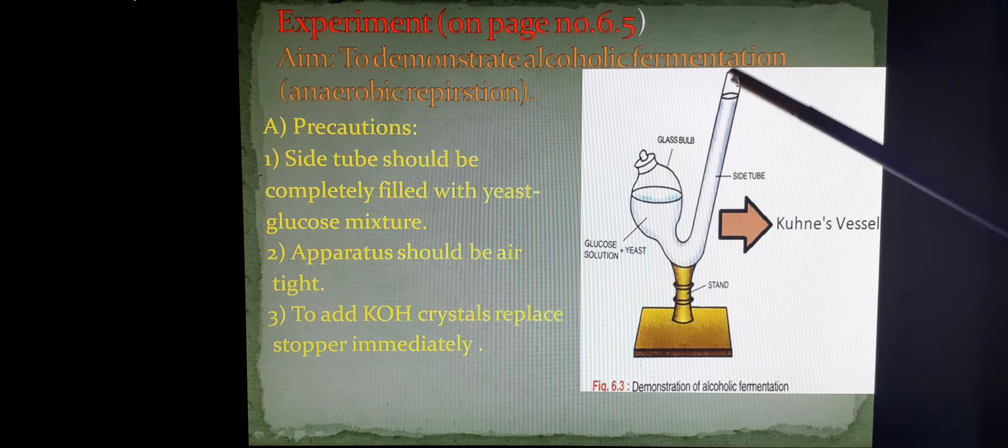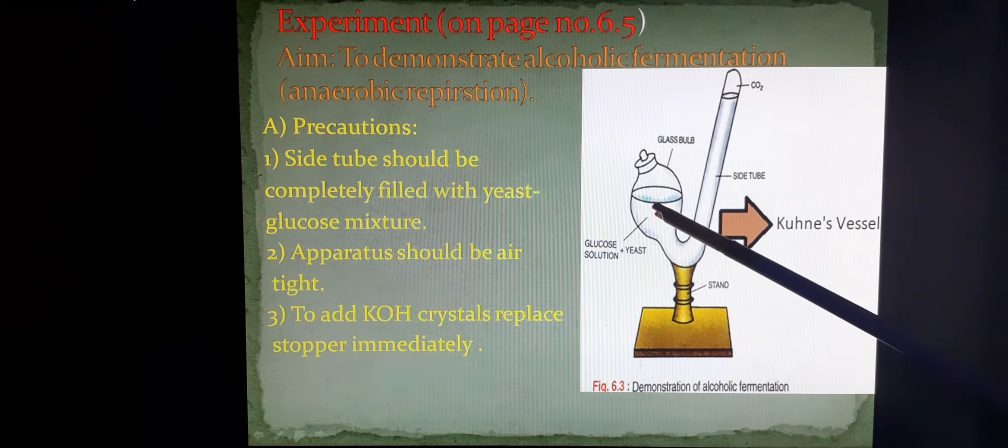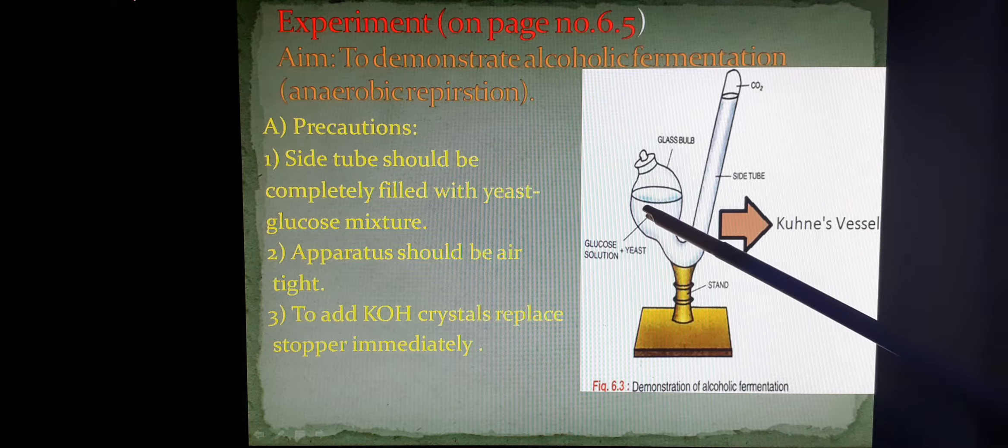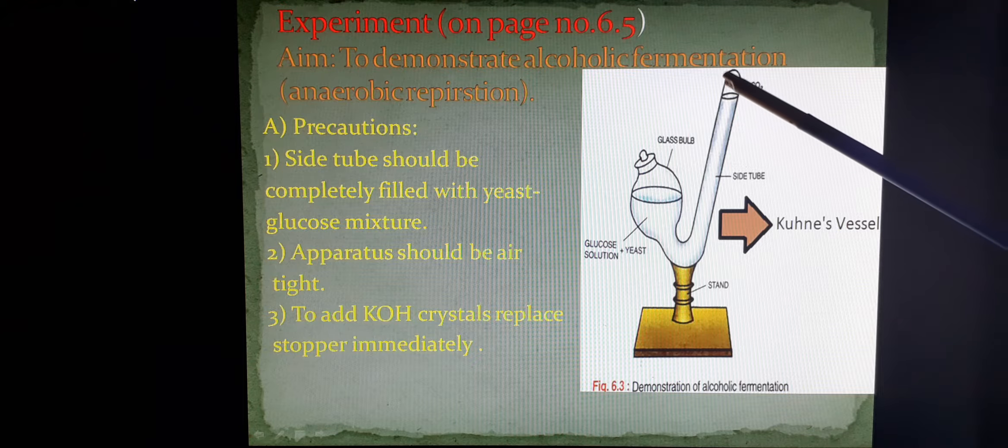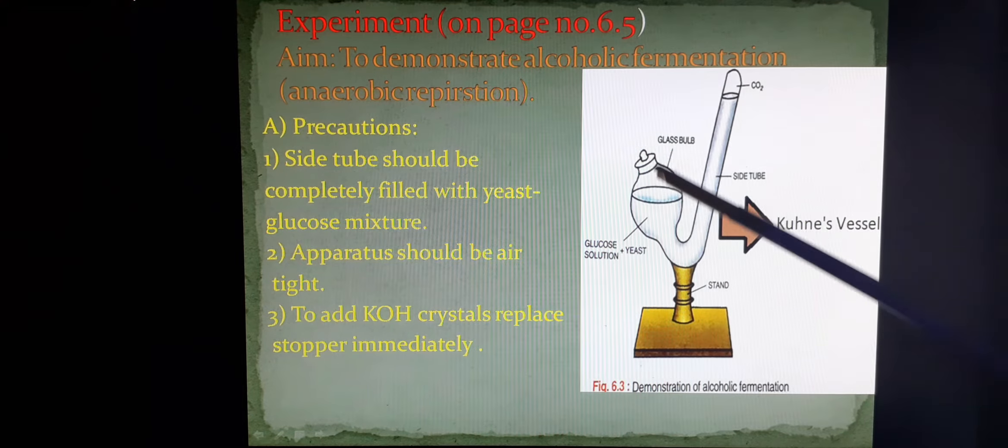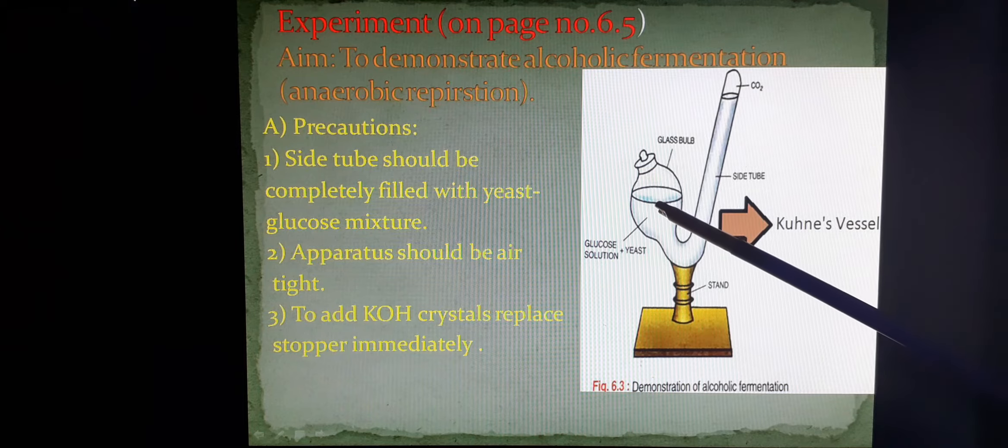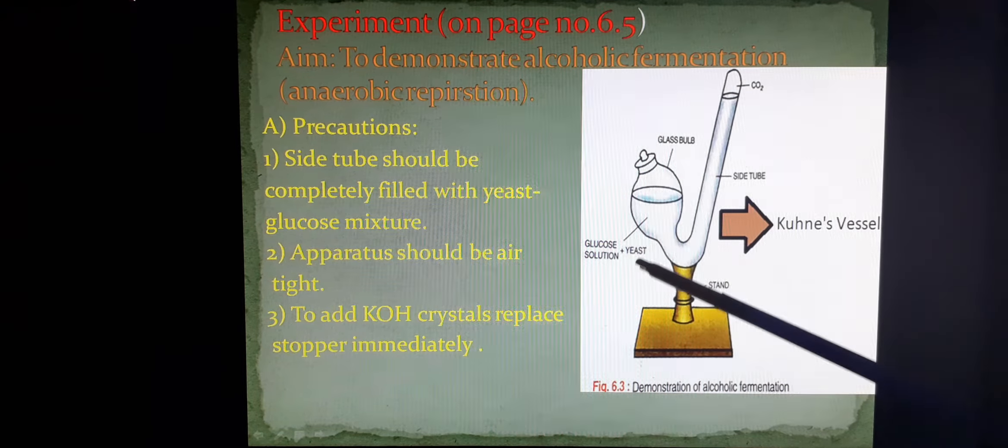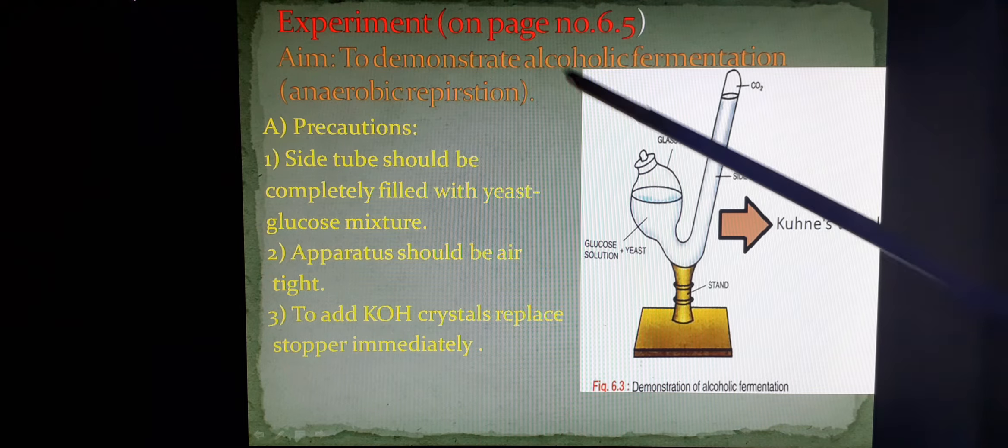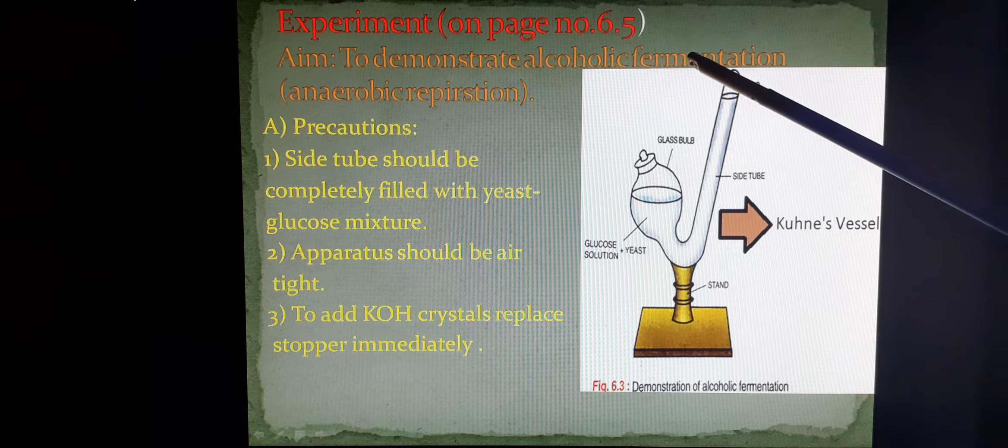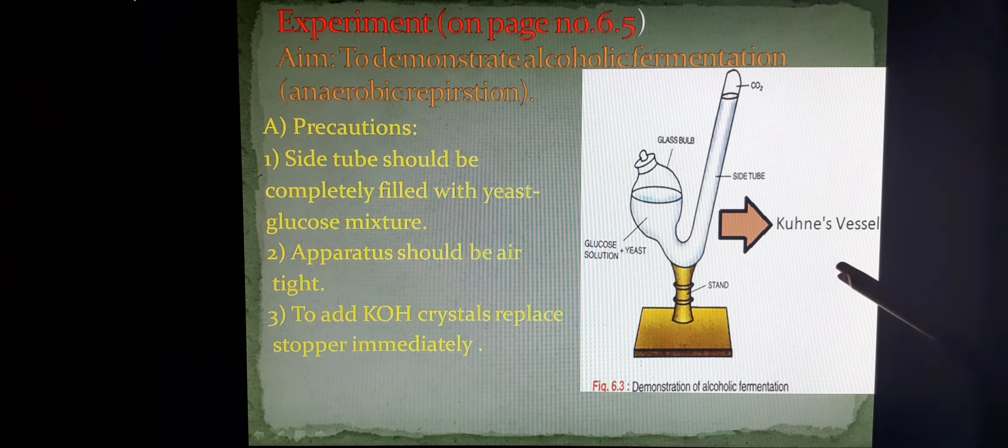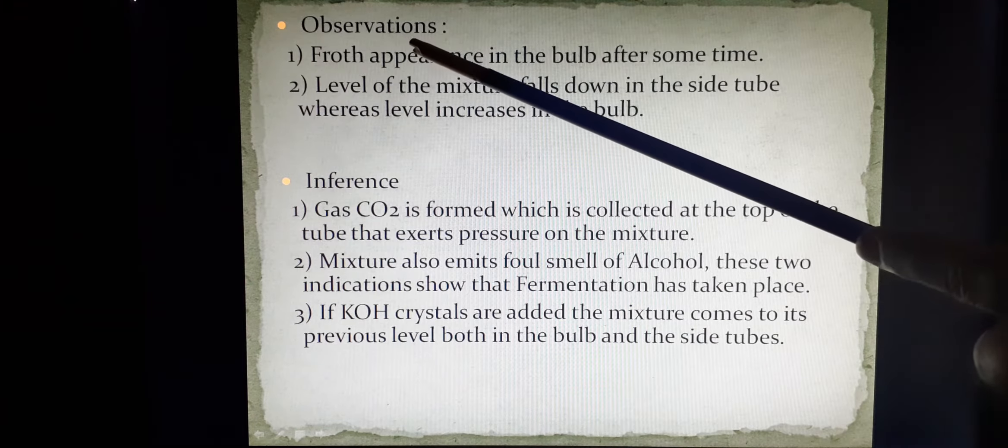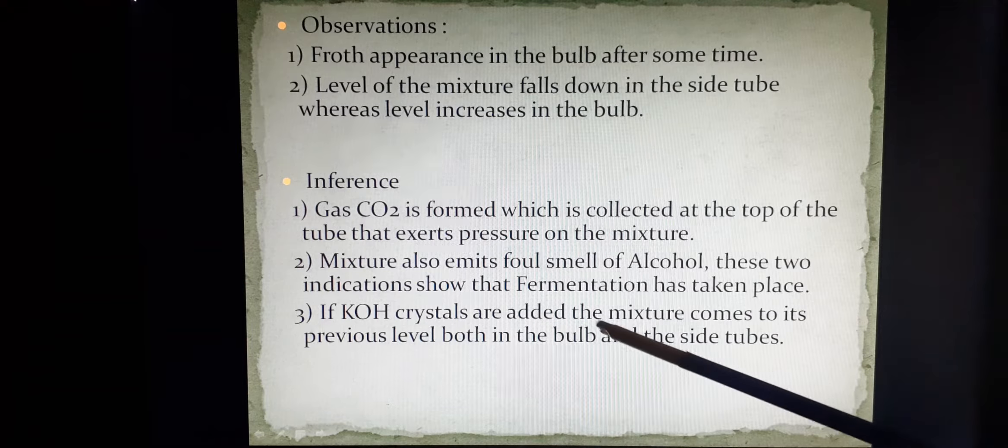No gap is there after potassium hydroxide has absorbed this gas. Because potassium hydroxide is able to absorb carbon dioxide, it indicates that carbon dioxide was released. The smell indicates that alcohol has been formed. So this proves our experiment that yeast being a plant has performed alcoholic fermentation and released carbon dioxide. For your understanding, we have written the observations and inference in this slide.